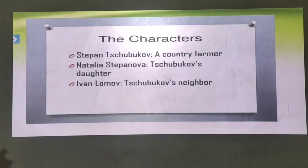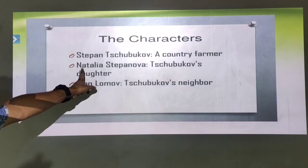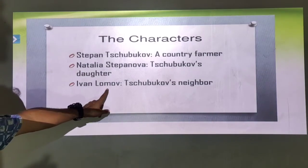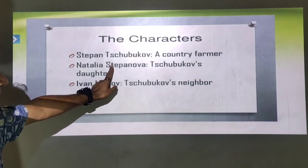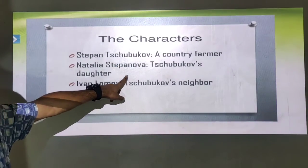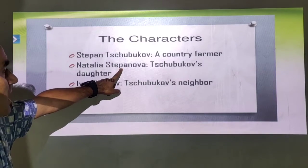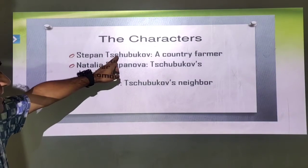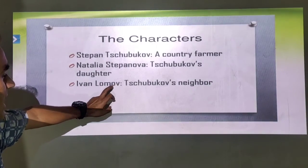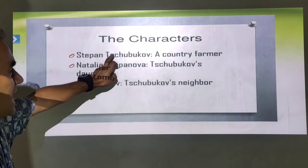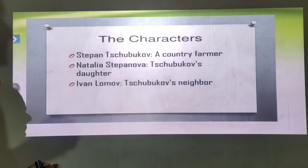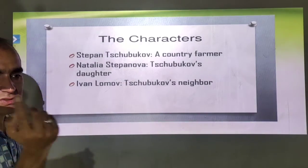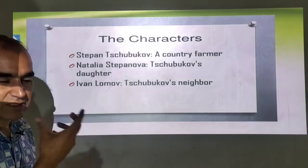There are three main characters in this play. One is Stefan Chubkov, second is Natalia, and third is Lomov. Chubkov is the father of Natalia, and Lomov is the neighbor of both Chubkov and Natalia. This whole play revolves around these three characters.